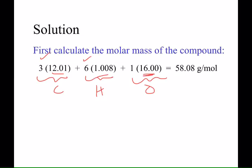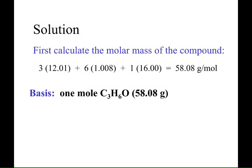So the molar mass for the compound is 58.08 grams per mole and we basically need to divvy that out into carbon, hydrogen and oxygen. So based upon one mole then, if you have one mole then you have a total of 58.08 grams of acetone. Does that make sense?